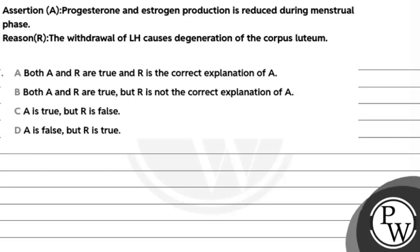Let's read this question. The question says, assertion-reason type question. The assertion here is: progesterone and estrogen are reduced during the menstrual phase. The reason here is: the withdrawal of LH causes degeneration of the corpus luteum.